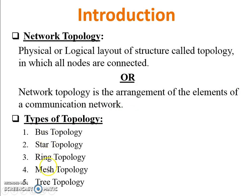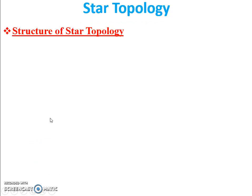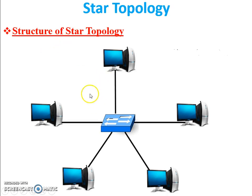The types of topology are: bus, star, ring, and mesh. Today I'm going to teach you star topology — a bus topology video is already available on my channel. Now, looking at the structure of star topology, all the pieces are connected in a star manner with a centralized device. This device may be a hub or a switch.